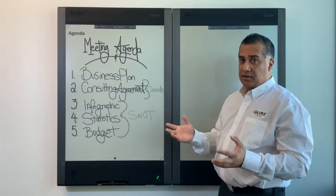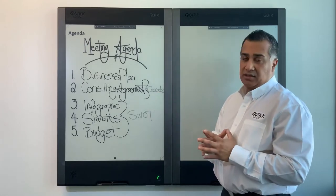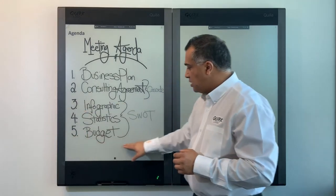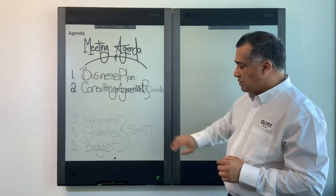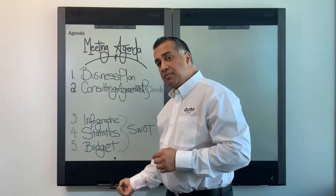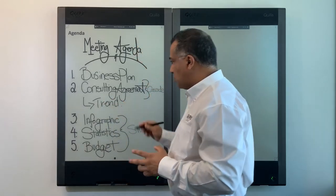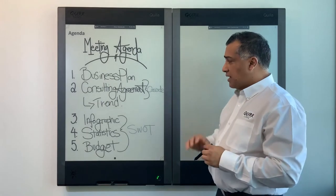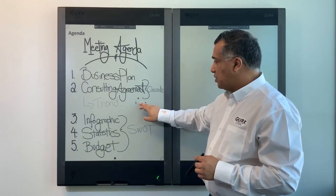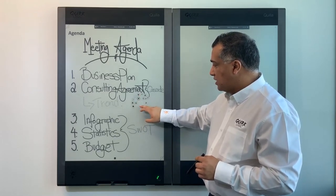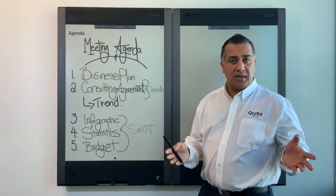Here's an example of a meeting agenda. I forgot to add trend analysis into my consulting agreement. I can grab my text using one finger to select it, then take two fingers to drag it down and move it. I can then grab my pen and add in another line called trend analysis. I can also select content and make it bold or change the color so it stands out as a topic I want to dwell deeper on in my presentation.